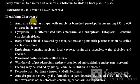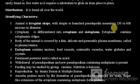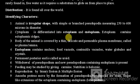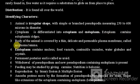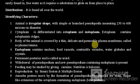Identifying characters: The animal is irregular in shape with simple and branched pseudopodia, measuring 250 to 600 microns in diameter. The cytoplasm is differentiated into ectoplasm and endoplasm. The ectoplasm contains ectoplasmic ridges, and the body is covered by a thin, delicate, permeable plasma membrane called the plasmalemma.